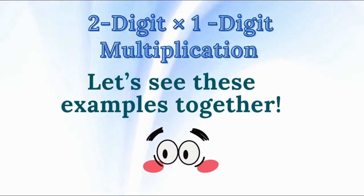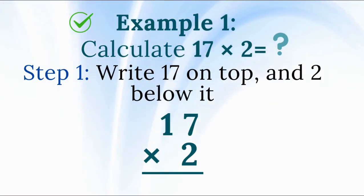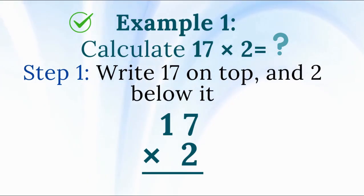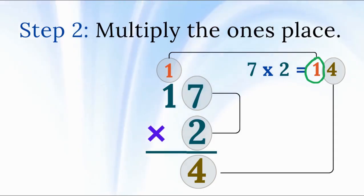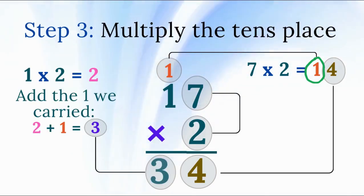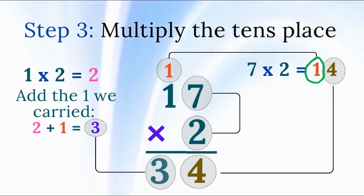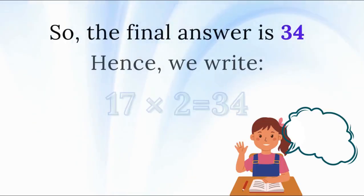2-digit times 1-digit multiplication. Let's see these examples together. Calculate 17 times 2 using the stacked form. Step 1: Write 17 on top and 2 below it. Step 2: Multiply the 1's place — 7 times 2 equals 14. Write down the 4 in the 1's place and carry the 1, placing it above the 10's column. Step 3: Multiply the 10's place — 1 times 2 equals 2. Add the 1 we carried, and we get 3. The final answer is 34. Hence, 17 times 2 equals 34.